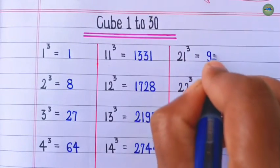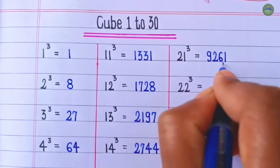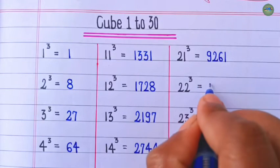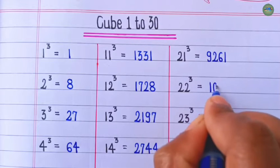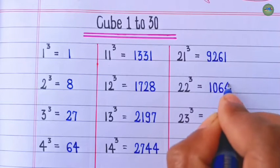Cube of 21 is 9,261. Cube of 22 is 10,648.